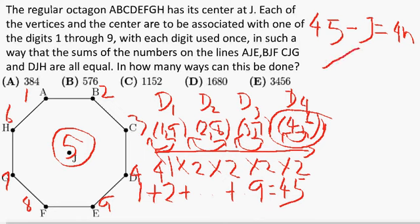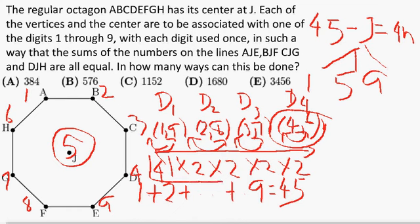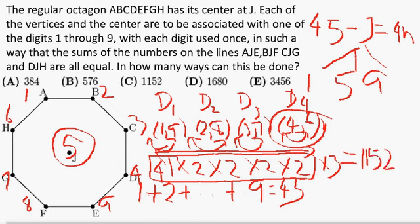How many possibilities are there for J that satisfy that condition? If J equals 1, that gives us 44. If J equals 5, that gives us 40. In total we have 3 possible selections of J. For each of those selections we have already figured out how many arrangements are possible. So our final answer is the total number of arrangements for each selection times the number of selections, and we end up with the answer 1,152.